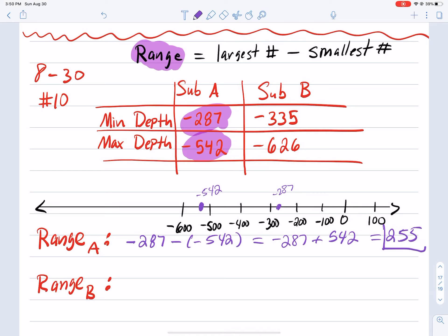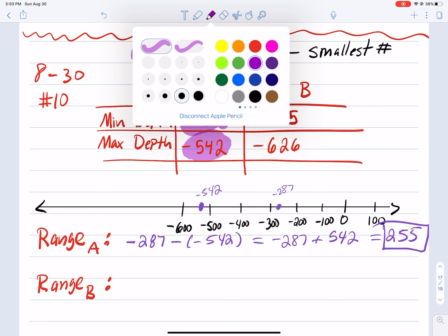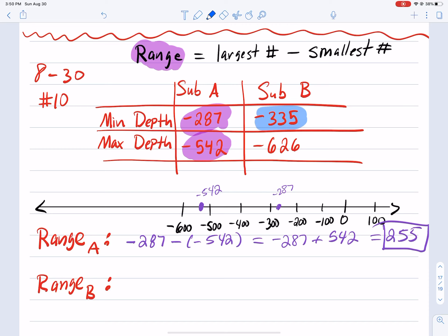And so that's the range for sub A. So the range for submarine B, same situation. So we have two of these values and let's find out which one is the largest number. So 335 is about right here and negative 626 is over here. So 335 is larger.